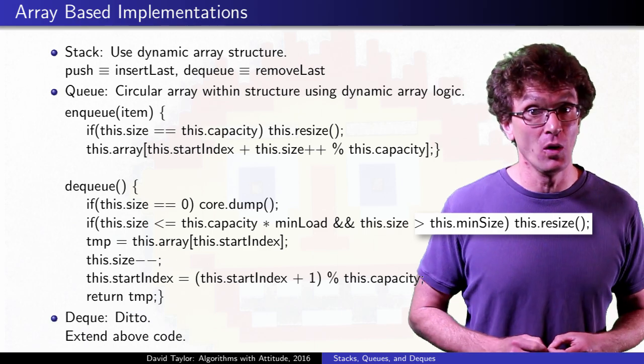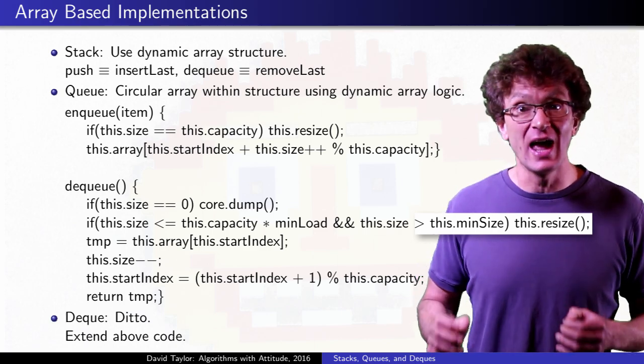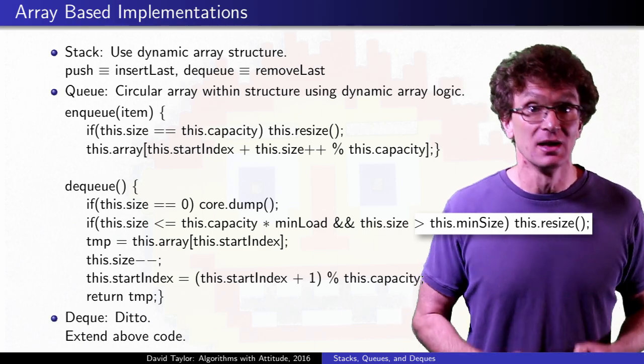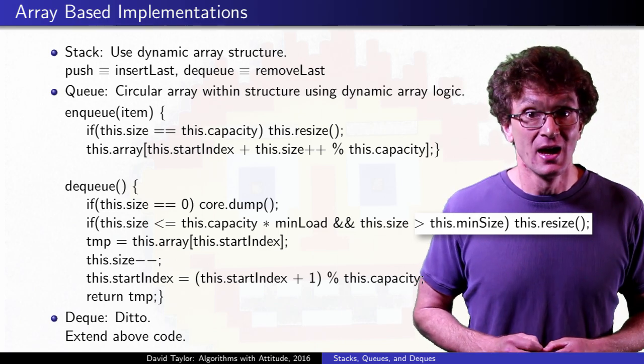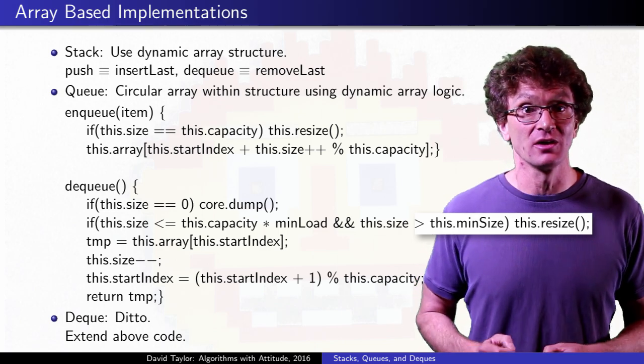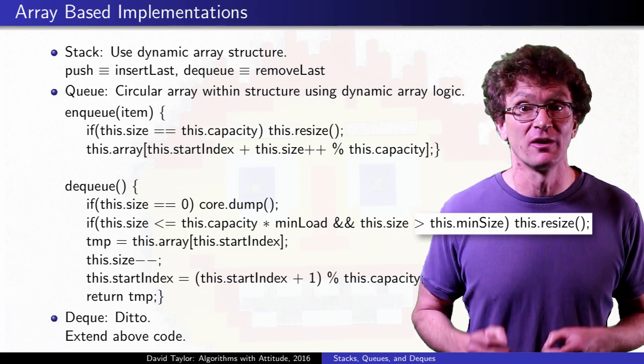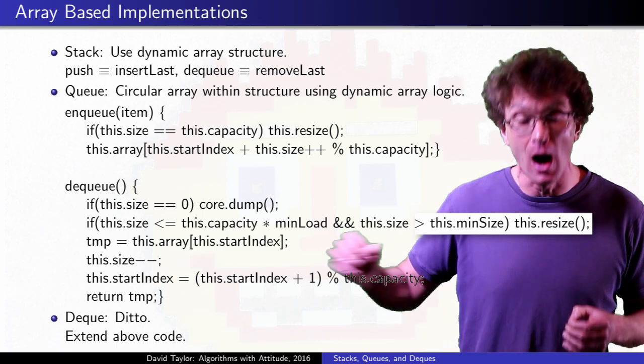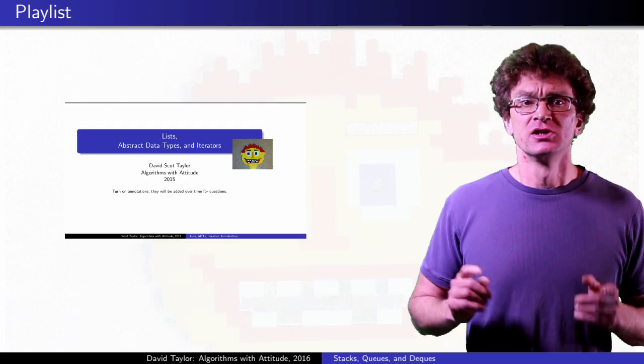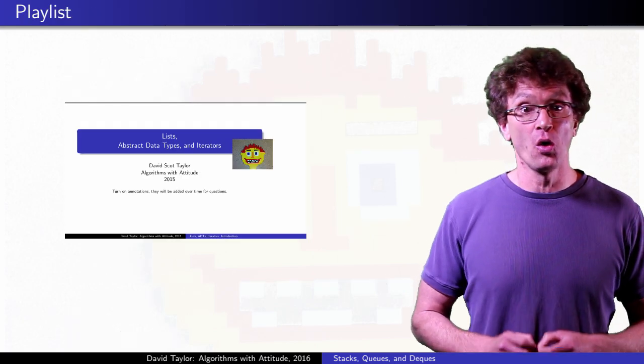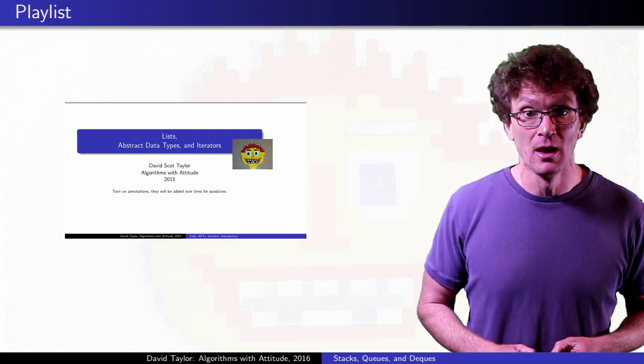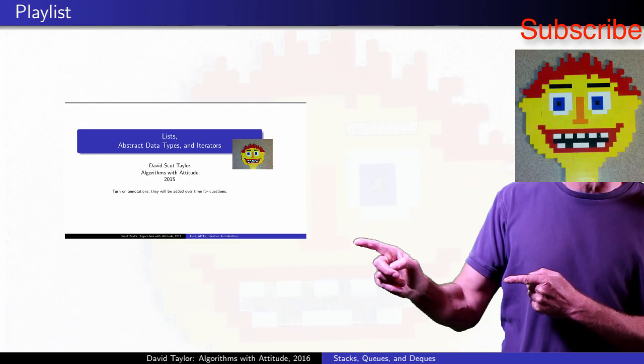For deques, the same logic works. You just need to rename enqueue to insert right, dequeue to delete left, and then write symmetric insert left and delete right methods that will sometimes wrap the index from the first position of the array back up to the last one. Check out the rest of the playlist, or the other playlists on my channel, but it's time for my popping lesson.